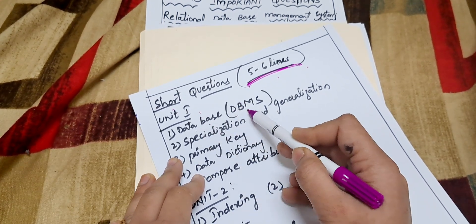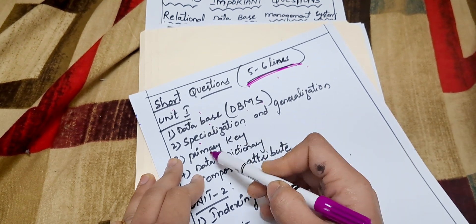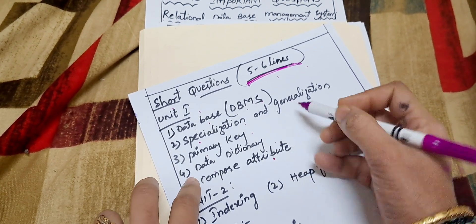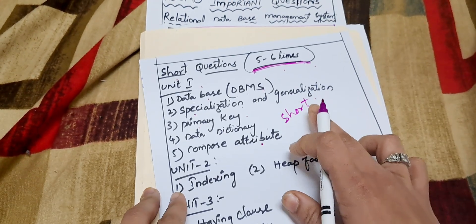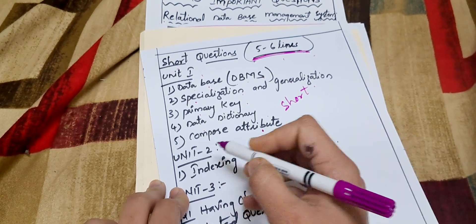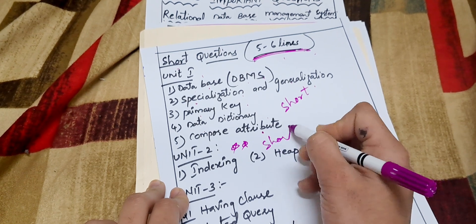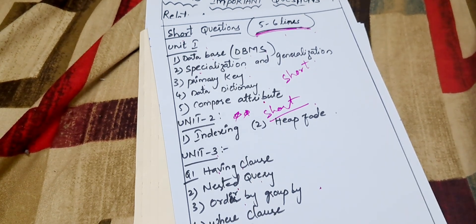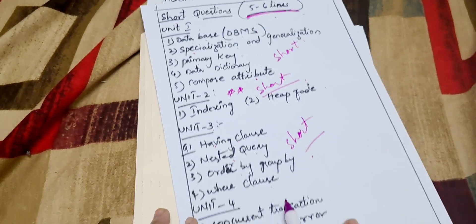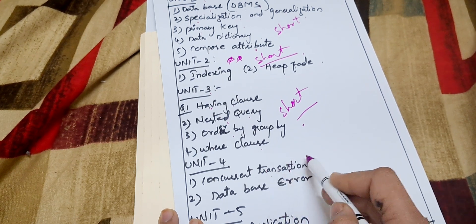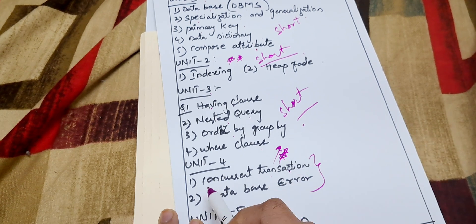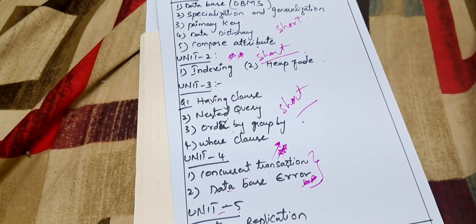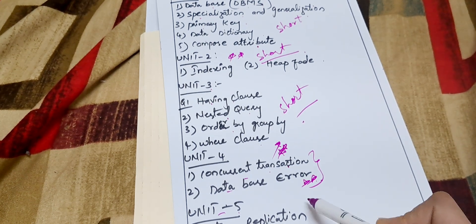Unit 1 short questions: database, DBMS, specialization and generalization, primary key, data dictionary, composite attribute. Unit 2 short questions: indexing and heap file — any one of these two may come. Unit 3 short questions: having clause, nested query, order by, group by, where clause. Unit 4 short questions: concurrent transaction and database error — both are very most important. Unit 5 short questions: data replication and data distribution.